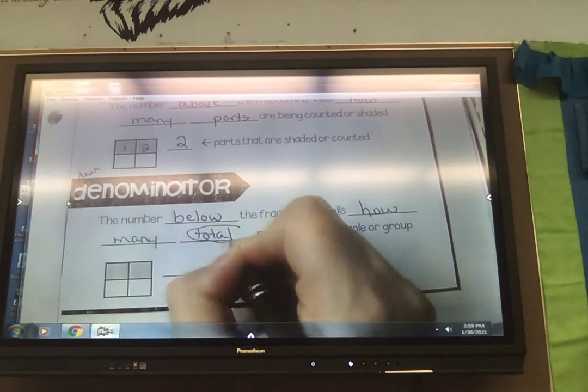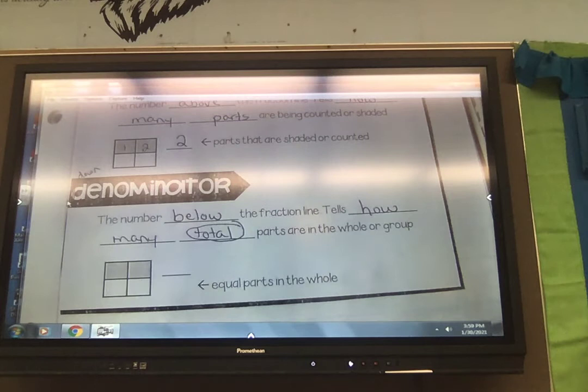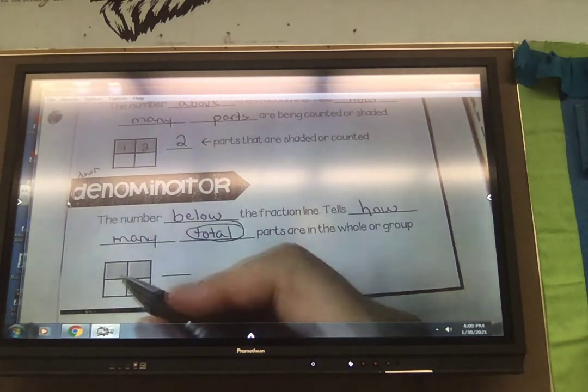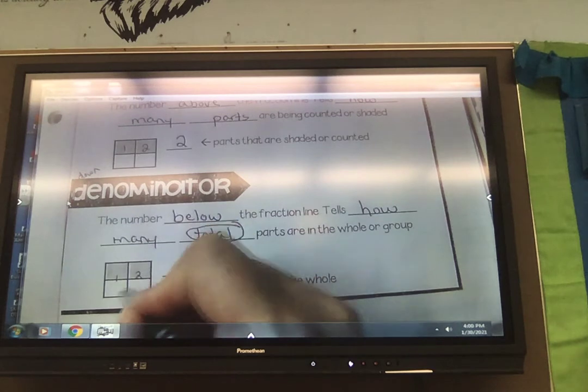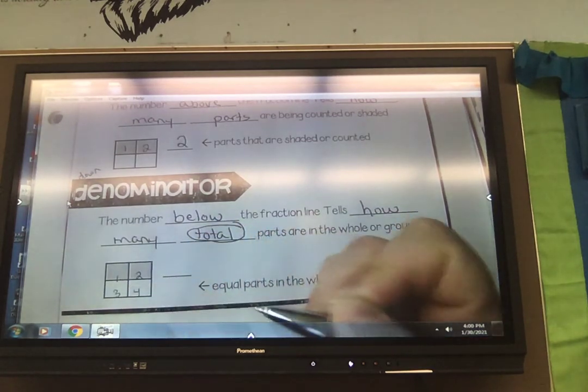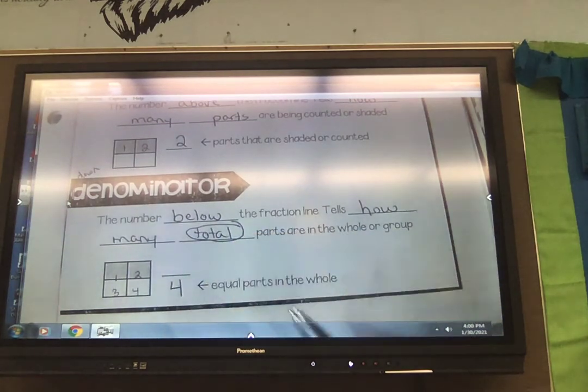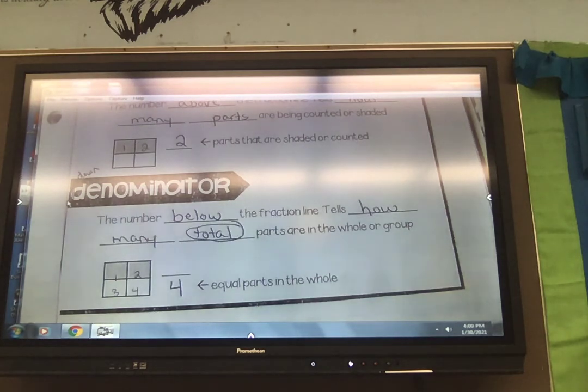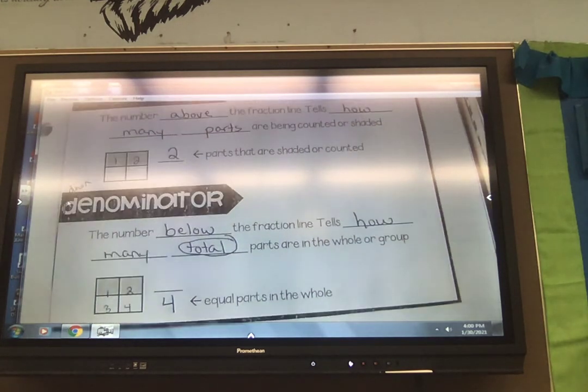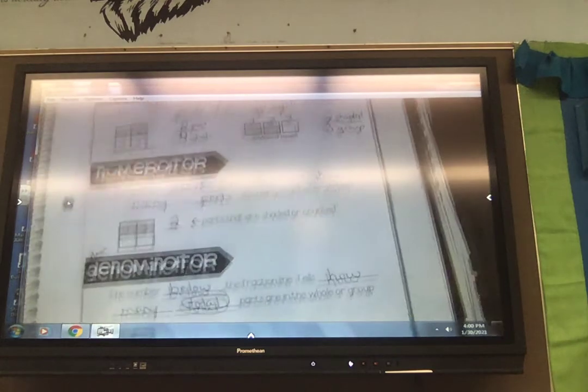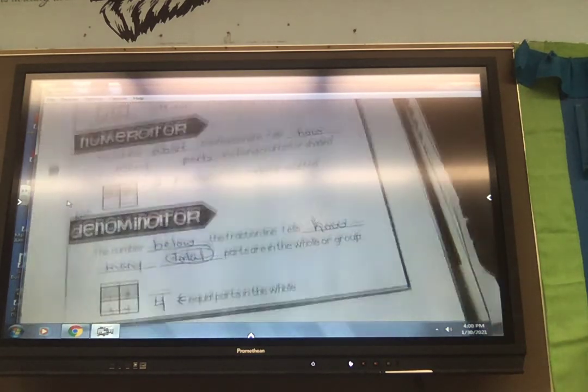And I'm going to circle that word, and I want you to circle that word as well. How many total parts are in the whole or how many total parts are in the group. So looking at our same fractional picture, our denominator is our total parts. It doesn't matter if they're shaded or not. So our total here is four, because there are four total equal parts in the whole. So there's your three words you need to be learning and studying. A fraction, numerator, and denominator.